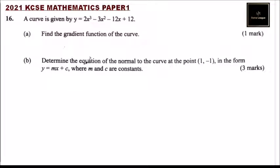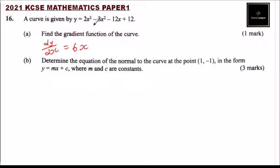Question 16: a curve is given by y = 2x³ - 3x² - 12x + 12. Part A: find the gradient function of the curve. To find the gradient function we differentiate, giving dy/dx = 6x² - 6x - 12. That is the gradient function of the curve, and you get one mark there.